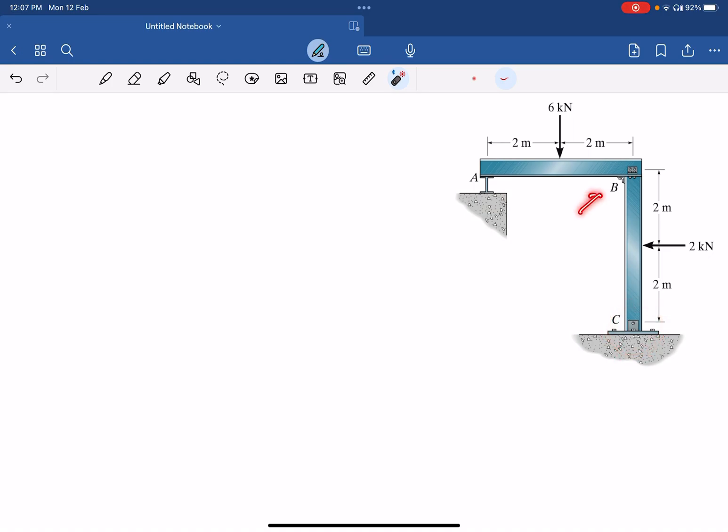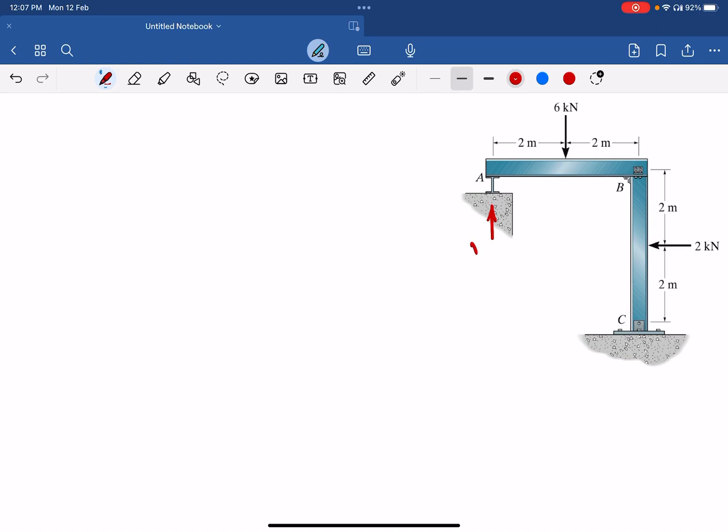This joint at B is a rigid connection, so there is no intermediate hinge here. We have one roller support, one pin support. So at the roller support, how many reactions do we have? We have one reaction, which is perpendicular to the surface, and let's call it YA. And at the pin support at C, we will have two reactions. The first reaction will be XC, and then we have another reaction, which is YC.